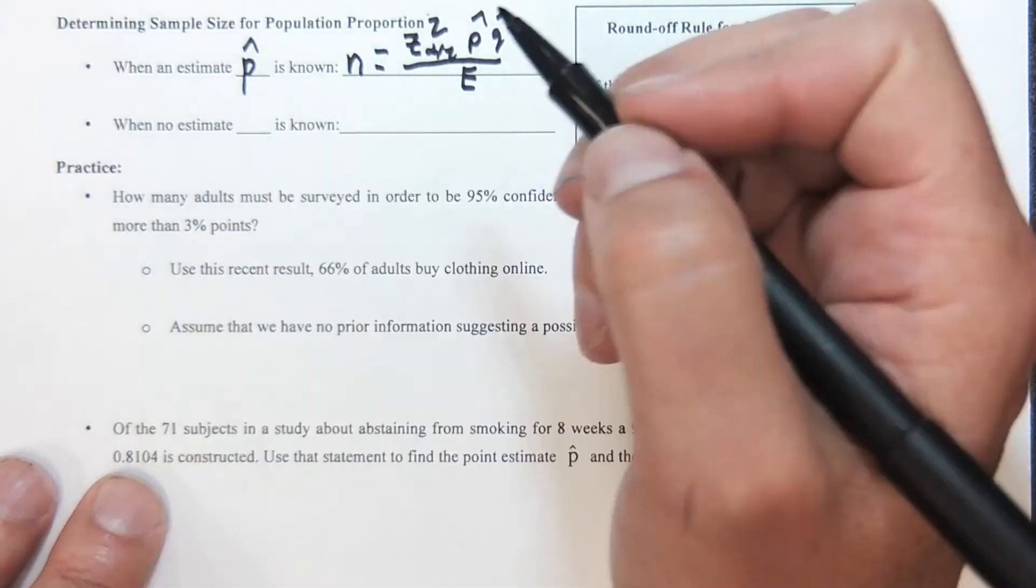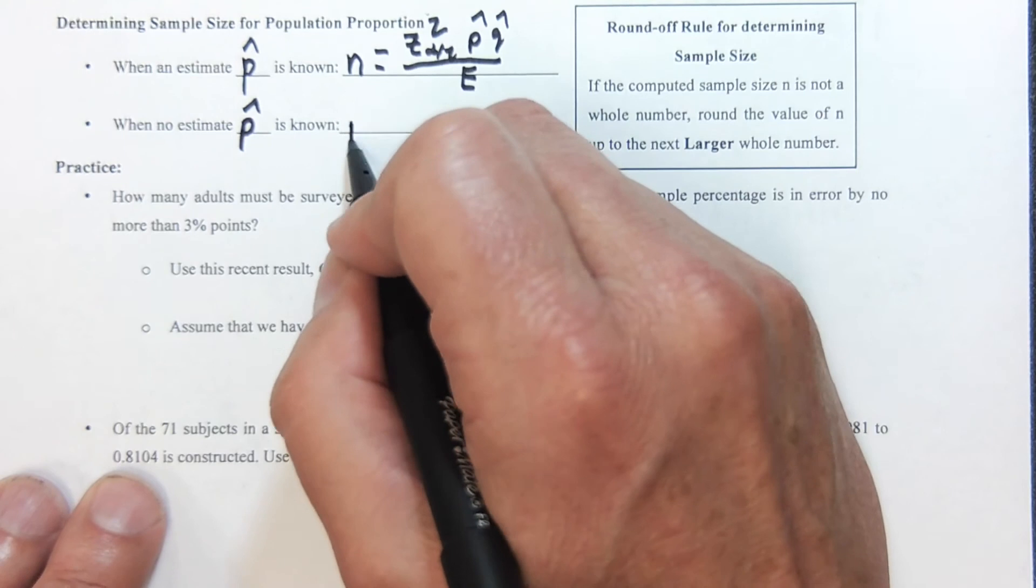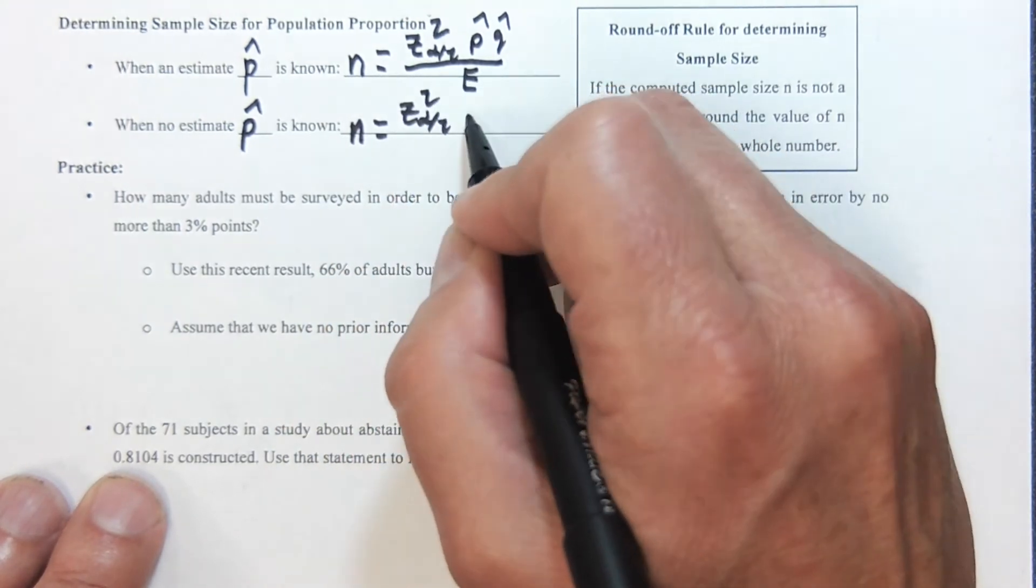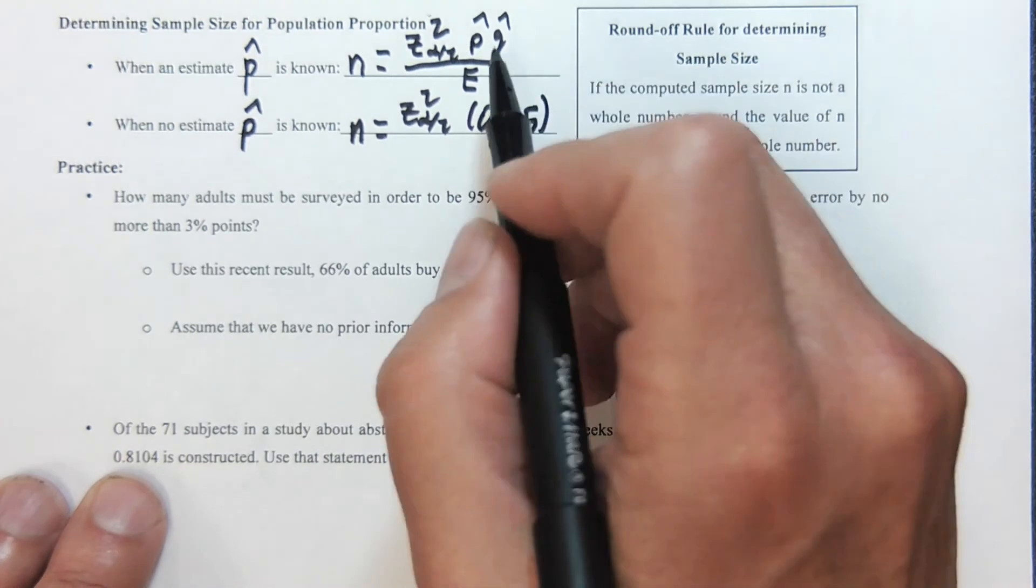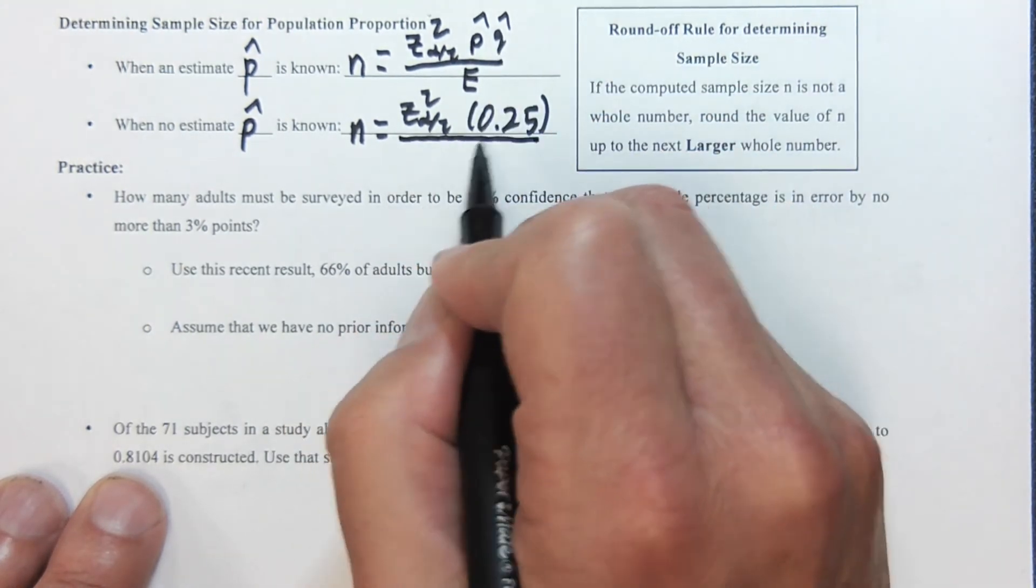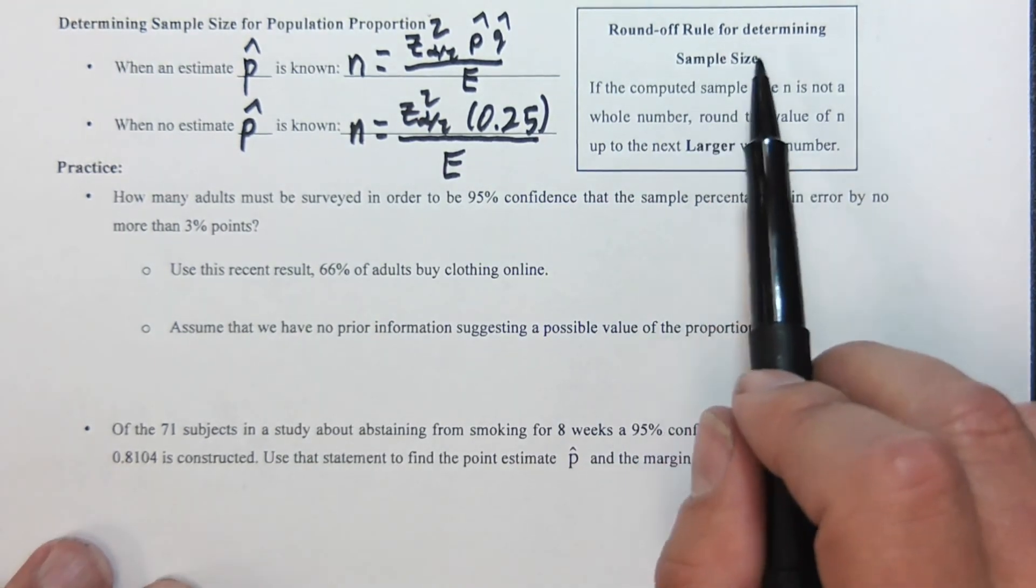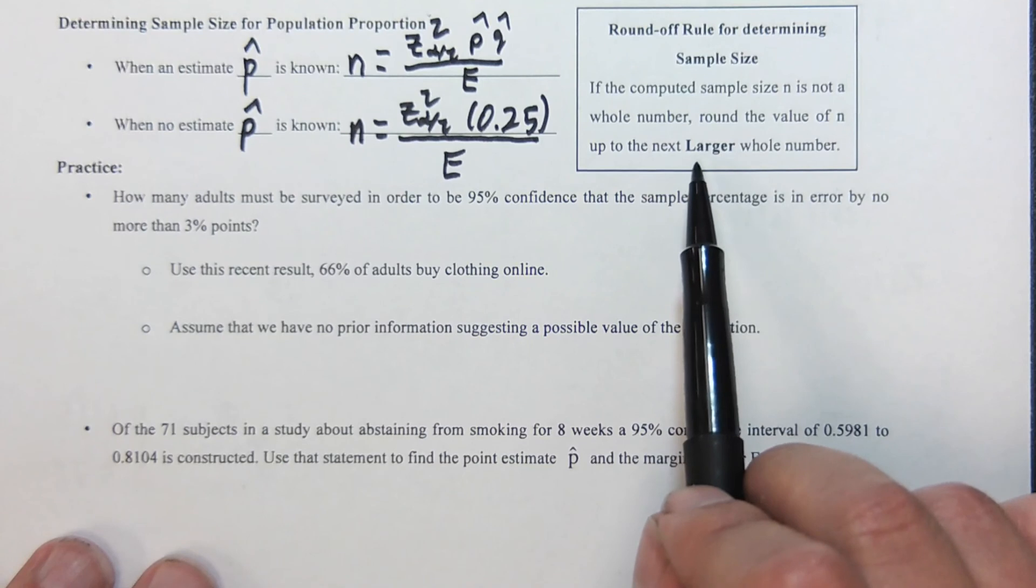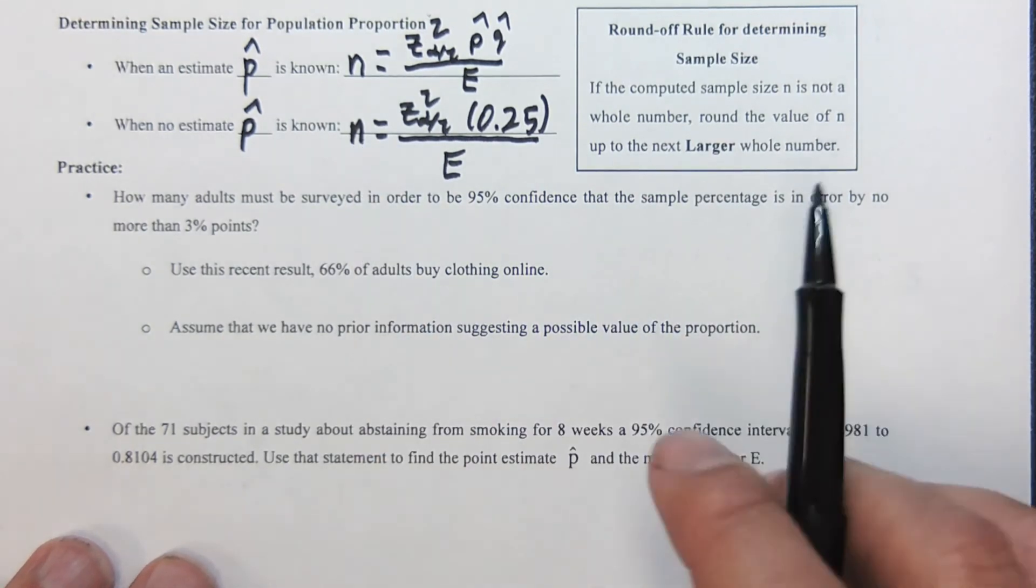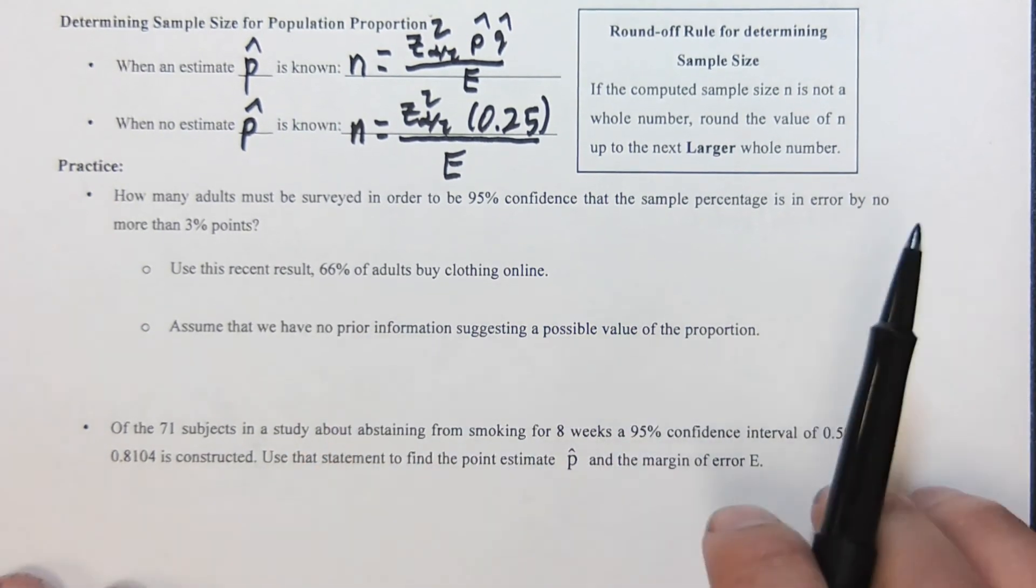When no estimate is known—in other words, we don't know p hat—then n is going to equal Z sub alpha over 2 squared times 0.25. There's a reason for that—the largest that will be is 0.5 times 0.5 to get 0.25, over that error. The round off rule is we always round up because we want to guarantee we're going to at least have that 95 or 90% confidence. Let's try our example.